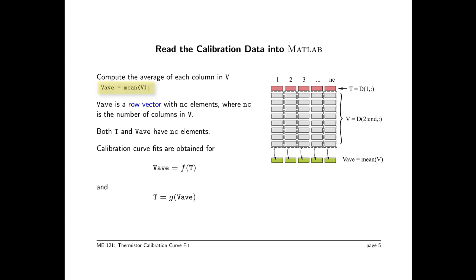MATLAB has an assumption that you're going to operate on columns by default. As indicated by the diagram to the right, the vav equals mean of v operation computes the column-wise mean. So each column has a mean value stored as one element of vav. vav is a row vector with nc elements. What we have are two relatively short vectors now, row vectors.